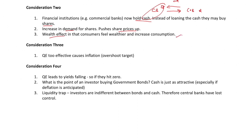Consideration three: if the QE was actually too effective — remember, you use QE when inflation is below target — it could mean that commercial banks lend to consumers and producers, boosting the economy so much that QE overshoots the inflation target of 2% in the case of the UK. However, that's possibly unlikely.